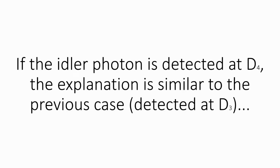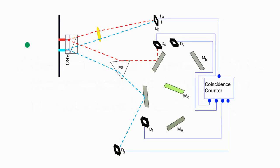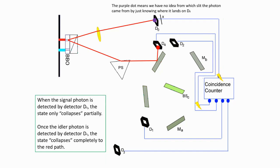Okay, back to the experiment. If the idler photon gets detected at D4, the explanation is similar to the previous case. Again, when the signal photon is detected by detector D0, the state only collapses partially, using the Copenhagen interpretation. Once the idler photon gets detected at D4, the state collapses fully to the red path.